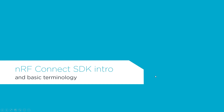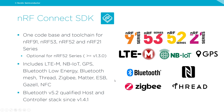NRF Connect SDK provides one code base and tool chain for the NRF91, NRF53, NRF52, and NRF21 series. The NRF91 series is our cellular IoT series. The NRF52 and NRF53 are our short-range series, supporting protocols such as Bluetooth Low Energy, Bluetooth Mesh, Thread, and Zigbee. The NRF21 series is our range extender, including the NRF21540 RF front-end module for 2.4 GHz range extension.